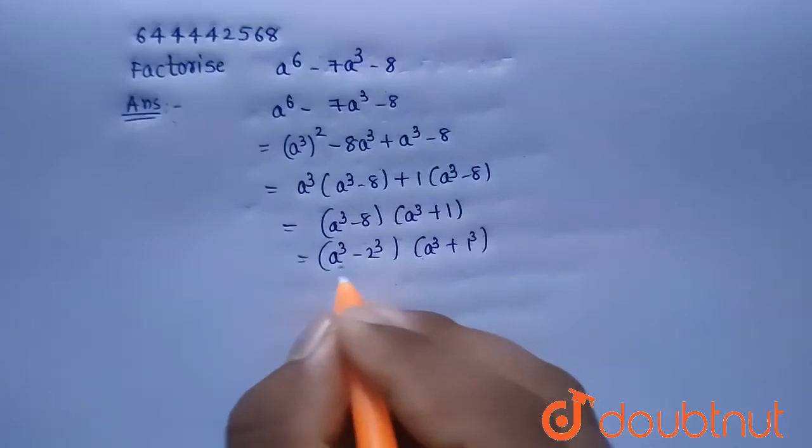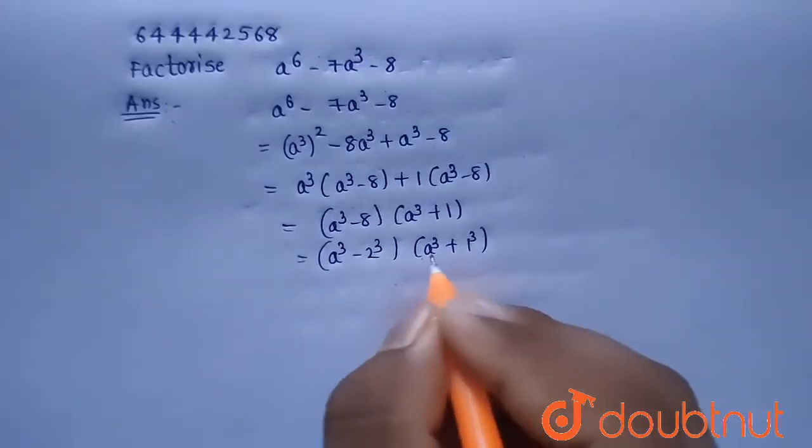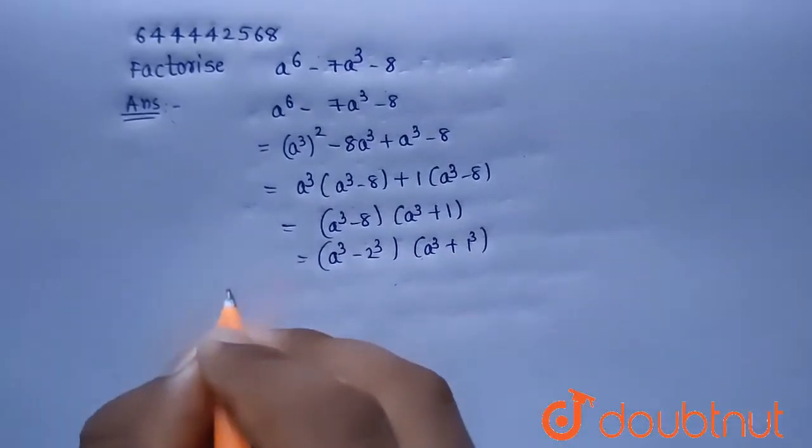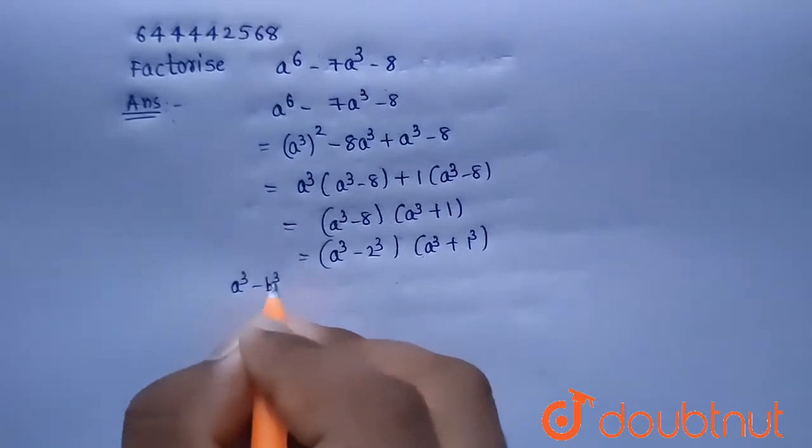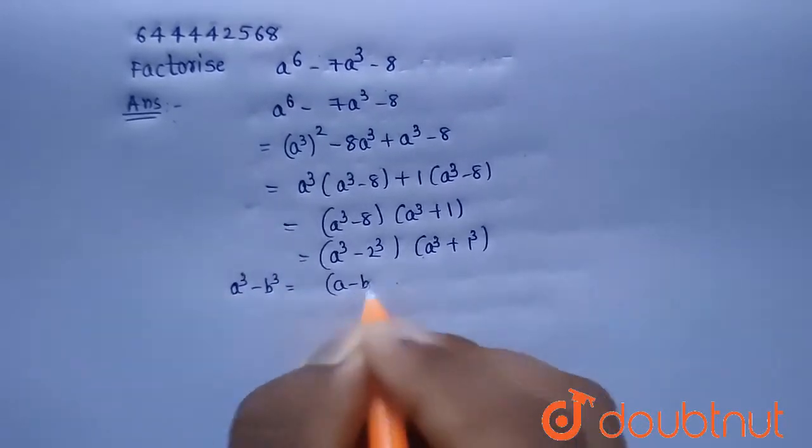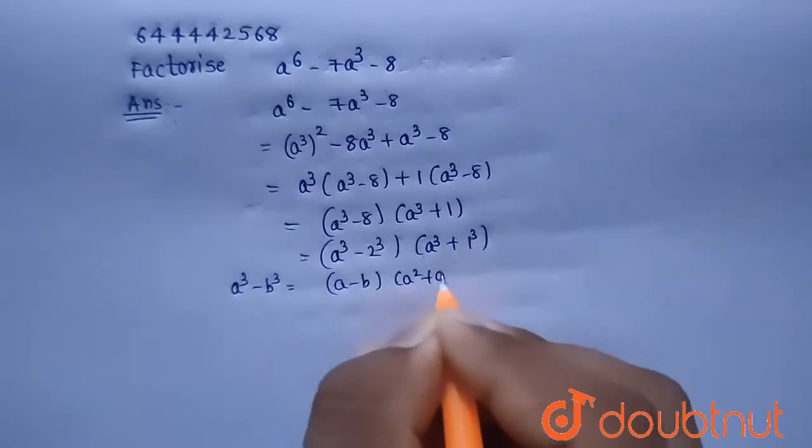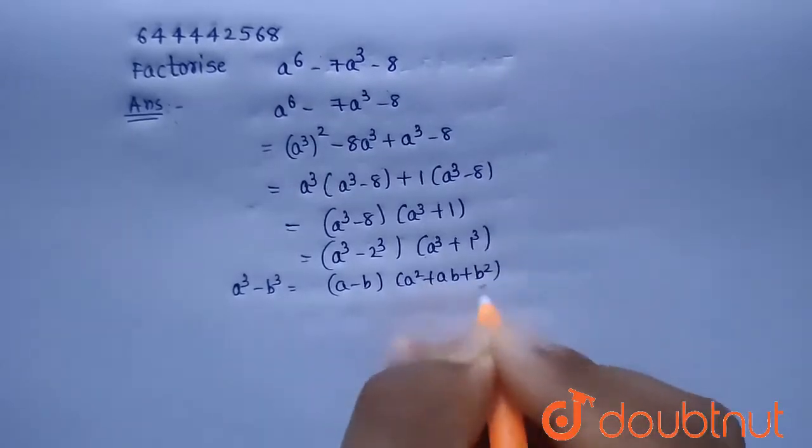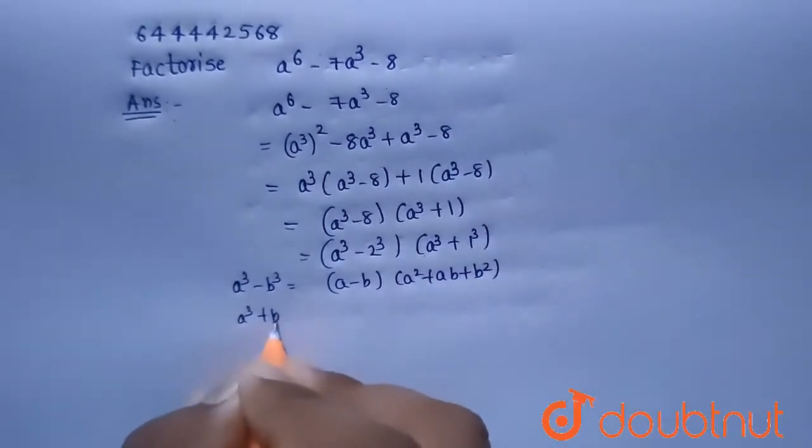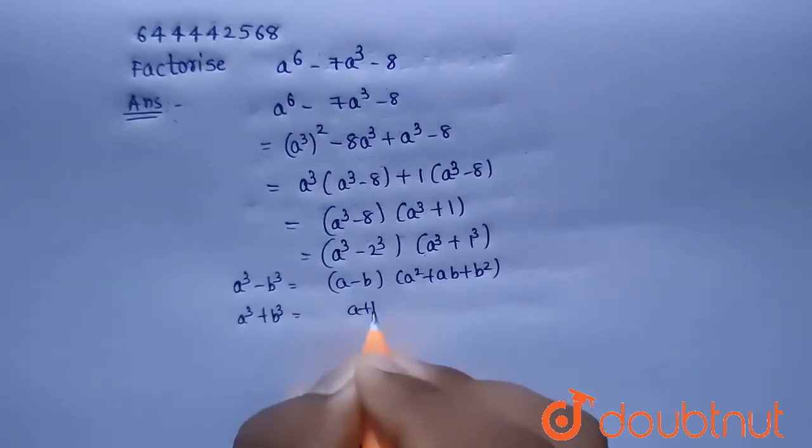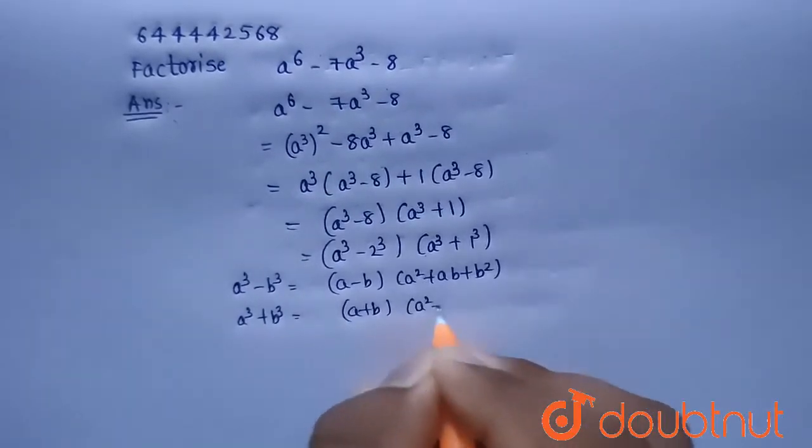Now it is in the form of a^3 minus b^3 and a^3 plus b^3. And we know that a^3 minus b^3 is nothing but (a minus b)(a^2 plus ab plus b^2). And a^3 plus b^3 is nothing but (a plus b)(a^2 minus ab plus b^2).